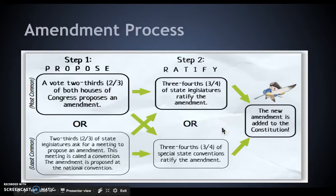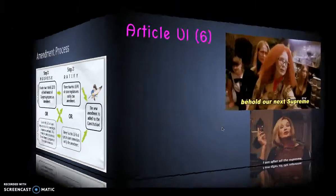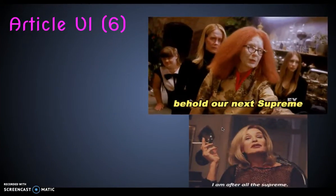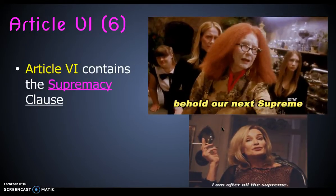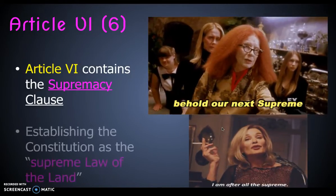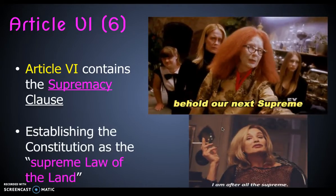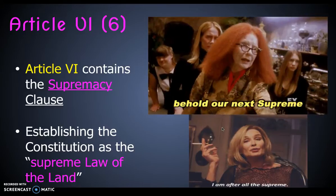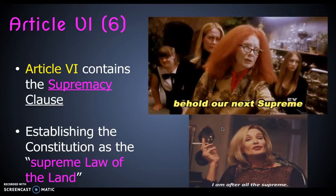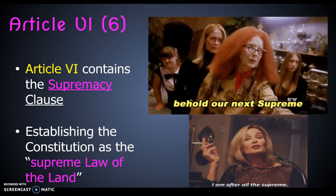This is the most important article because we could change the way the Constitution is structured simply by adding an amendment, or make an amendment to change or delete something else. Article 6 is the supremacy clause, which defines the national government as the most supreme. The phrase 'the supreme law of the land' means the Constitution is the highest law in our country, and everything else has to line up with it.